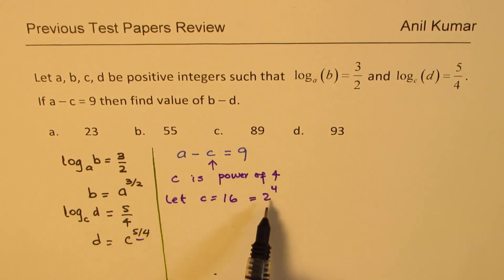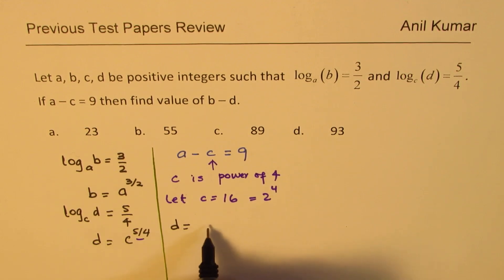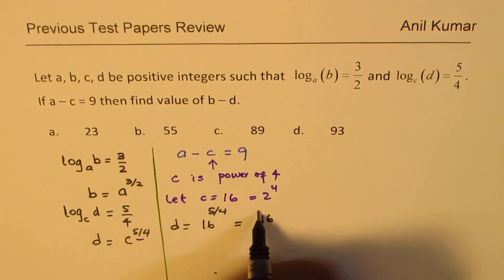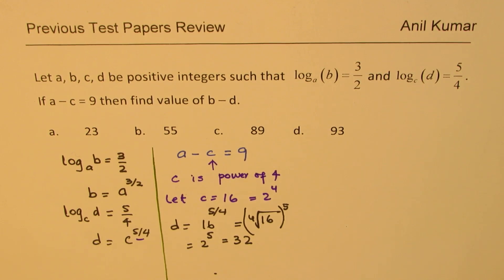So we assume that C is 2 to the power of 4 or 16. So if that is so then what is the value of D? In that case D should be 16 to the power of 5 over 4, which is to say it equals 32. Because it is the 4th root of 16 to the power of 5. So the 4th root is 2. So we get 2 to the power of 5 which is 32. I am showing all these steps only for you to understand the whole process.